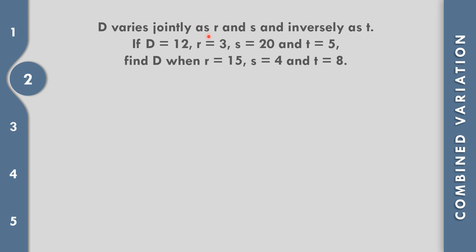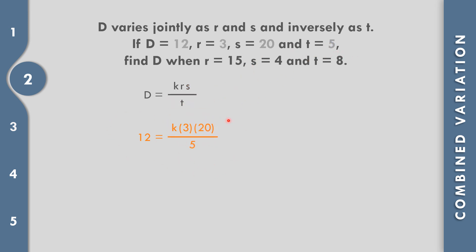Problem 2: D varies jointly as r and s, and inversely as t. So, d equals k times r times s over t. Given d equals 12, r equals 3, s equals 20, and t equals 5, we substitute: 12 equals k times 3 times 20 over 5. Multiplying both sides by 5 gives 60 equals 60k. Dividing both sides by 60, k equals 1.